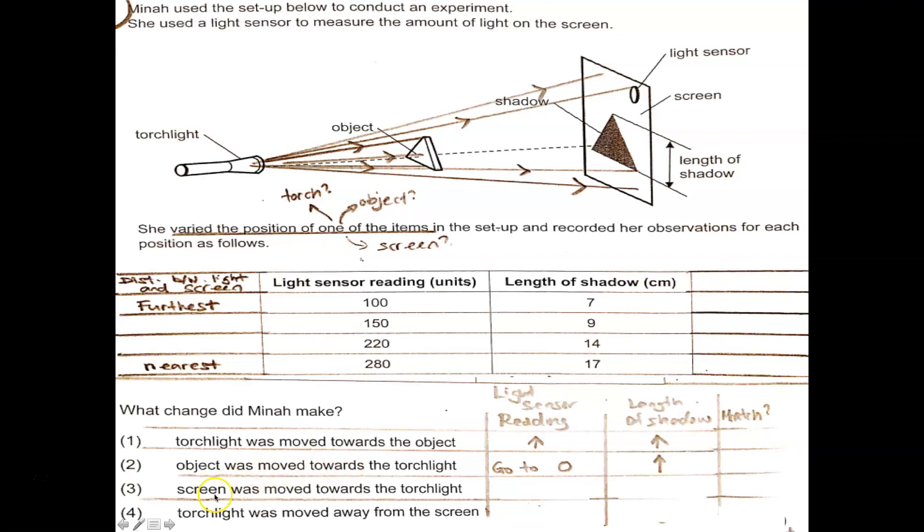Let's look at three now. The screen was moved towards the torchlight. If the screen was moved towards the torchlight, as you can see from the lines here, the height of the shadow will actually be shorter and shorter. The light sensor reading will be higher because as the sensor is nearer to the torchlight, it will actually measure a higher light intensity. But the height of the shadow will actually decrease. This is the height, followed by this height. And the screen is here, the height will actually be here. So this one is decreasing, which does not match this. So three is not the answer.